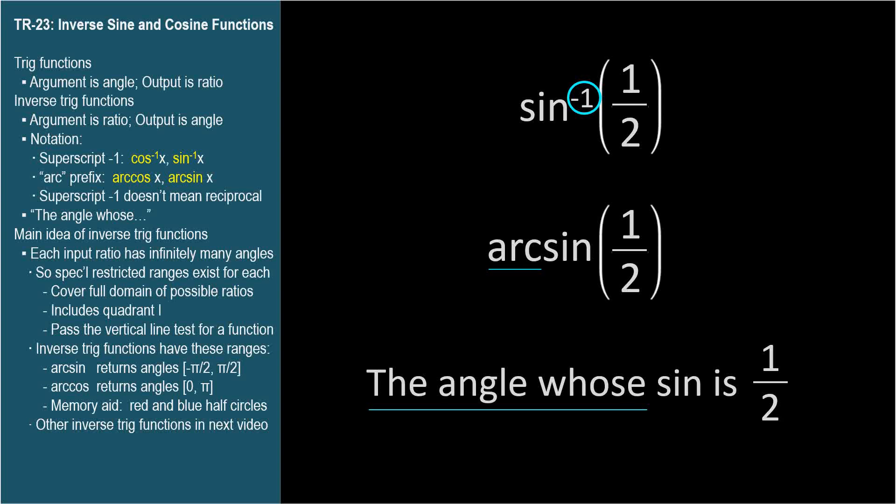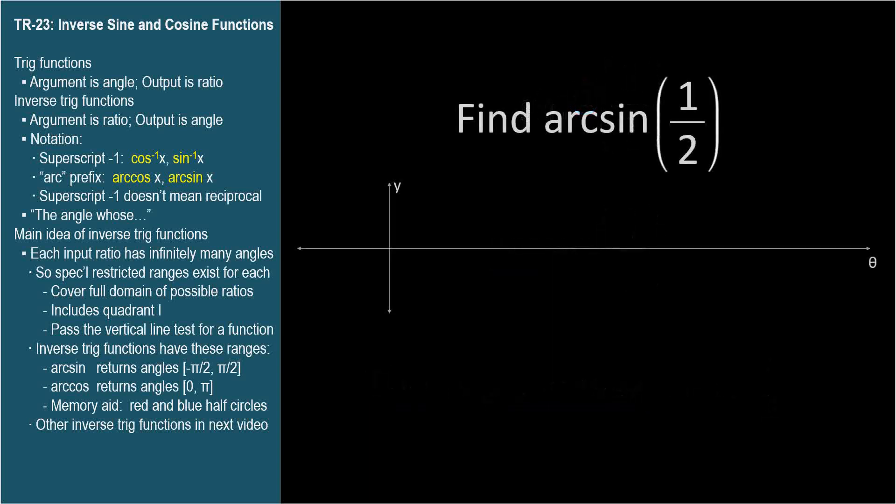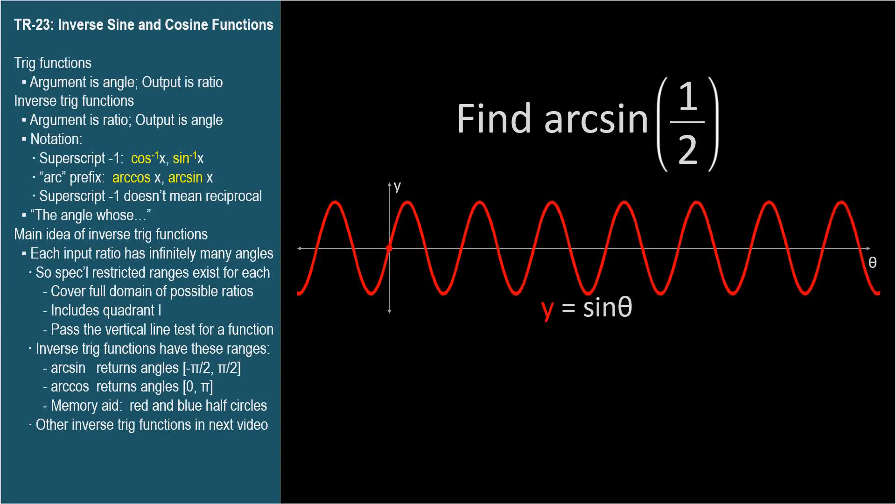Let's look at a graph of the sine function. Remember our red dot memory aid. Sine intersects the origin. The curve has a compressed theta axis so I can show more cycles on the curve. So it's still a perfectly good sine wave. The arc sine of 1 half means the angle whose sine is 1 half.